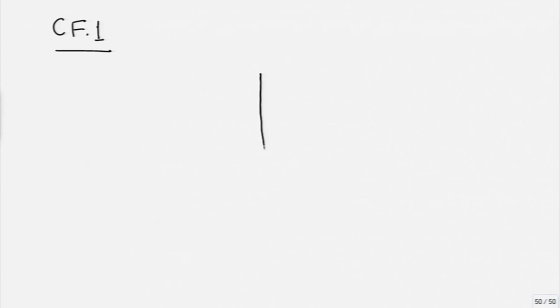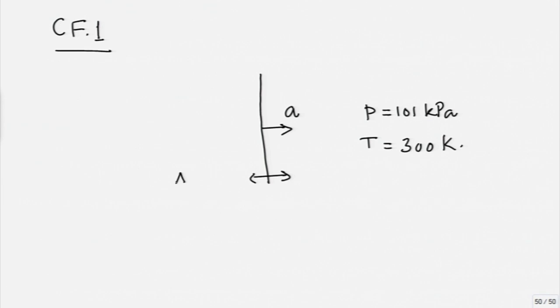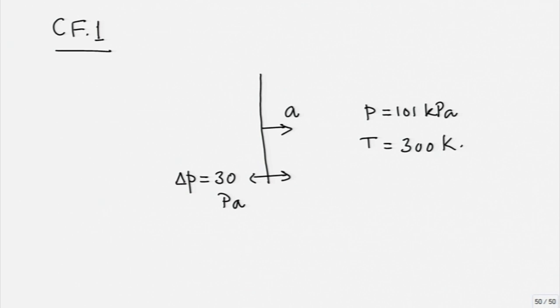Let me draw a very simple sketch to show what is given. We have this sound wave front which is moving with the speed A. The pressure is 101 kilo Pascal ahead of the wave and the temperature is 300 Kelvin ahead of the wave. Across the wave, delta P is given as 30 Pascal — there is a small increase in pressure as we have seen earlier in the lecture.